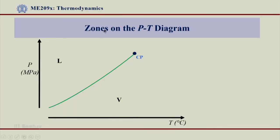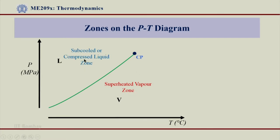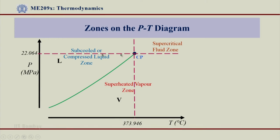Let us look at the pressure-temperature (PT) diagram, as you can see here — a pressure-temperature diagram with a LV line going from the triple point (TP) to the critical point (CP). On the right side of this LV line is the superheated vapor zone, and on the left side is the sub-cooled or compressed liquid zone. When pressure and temperature are beyond the critical range — that is, pressure beyond critical pressure and temperature beyond critical temperature — we lie in the supercritical fluid zone.